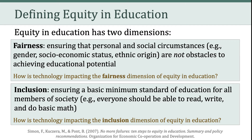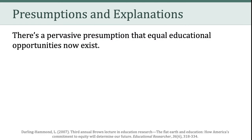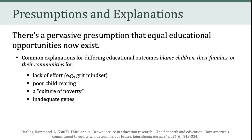If we connect that back to the fairness dimension of equity, recall that fairness means ensuring that personal and social circumstances are not obstacles to achieving educational potential. And when it comes to the inclusion dimension, that means ensuring that everyone has a basic minimum standard of education. As Darling-Hammond suggests in her analysis of the 2003 PISA results, we are not living up to those ideals. Darling-Hammond argues there's a pervasive presumption that equal educational opportunities now exist.